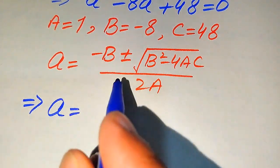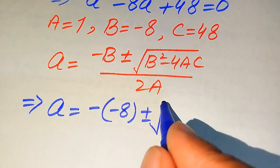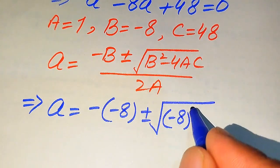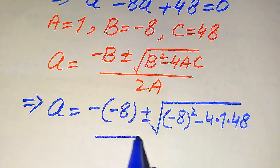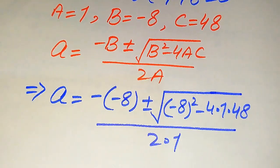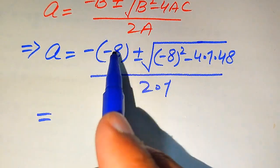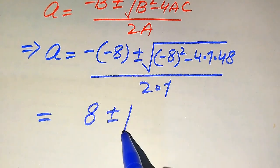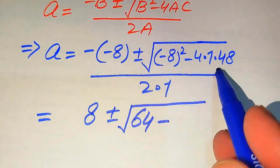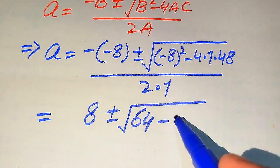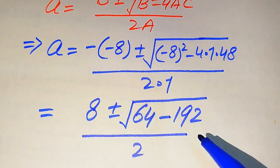Substituting the values: minus times (minus 8), plus or minus square root of (minus 8) squared minus 4 times 1 times 48, divided by 2 times 1. Simplifying: minus times minus becomes plus 8, and minus 8 squared becomes 64, minus 4 times 48 equals 192, divided by 2. Subtracting gives 64 minus 192 equals minus 128, divided by 2.